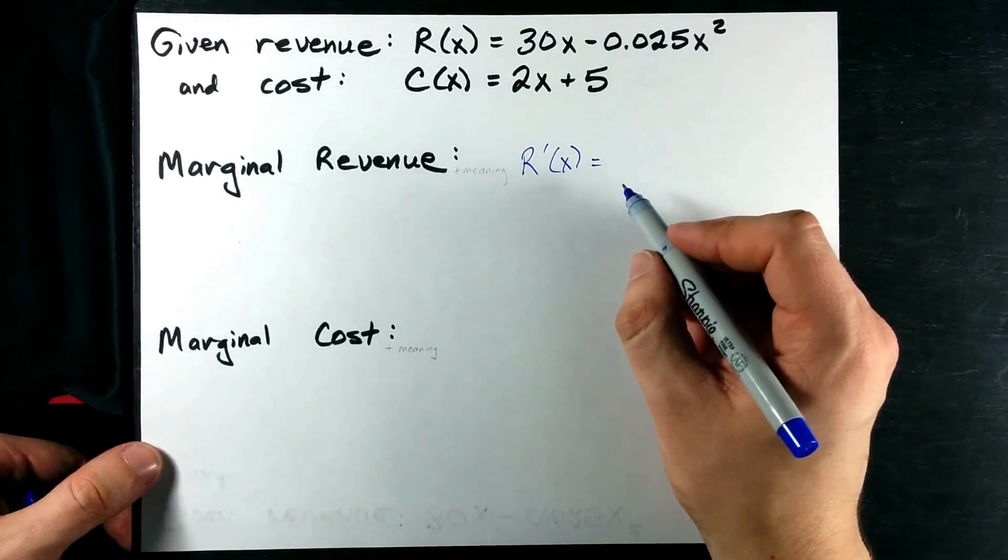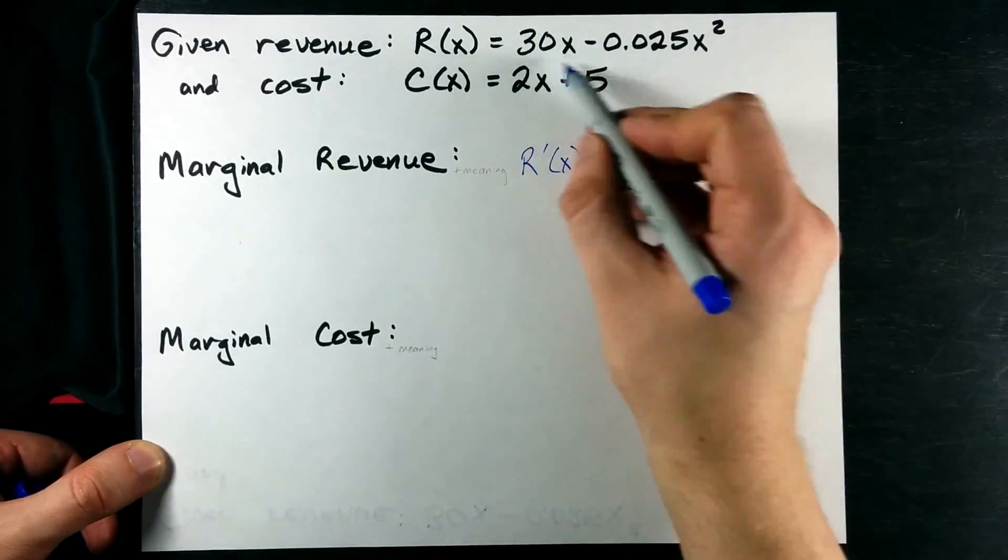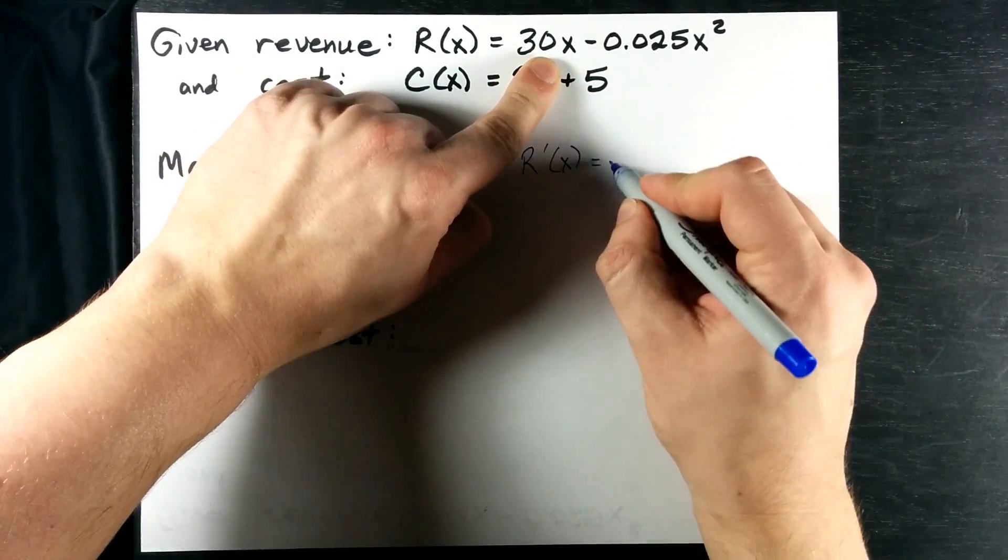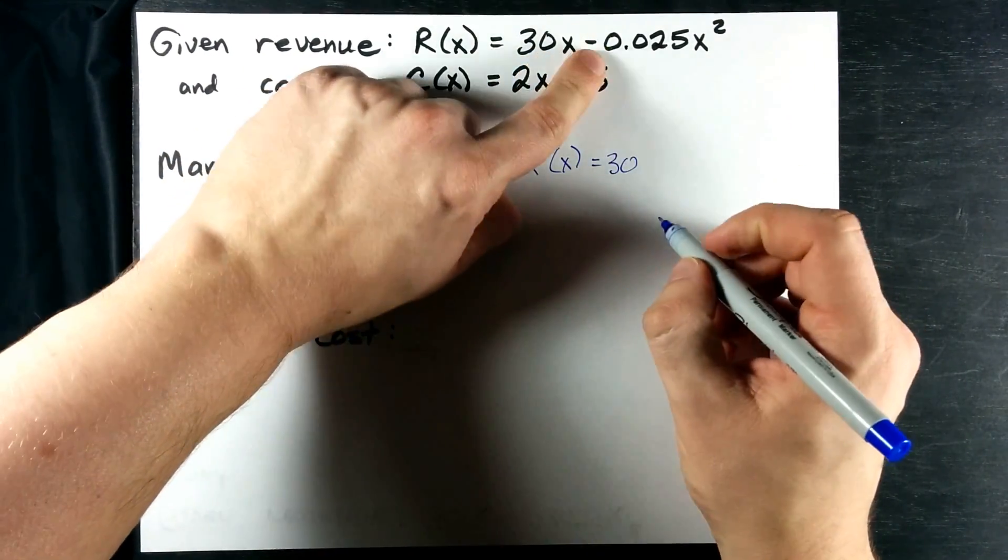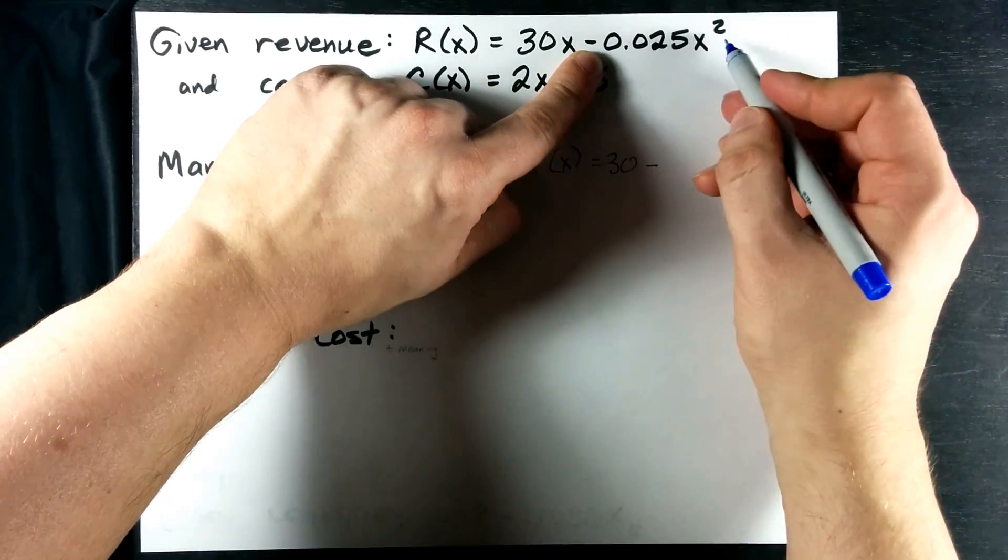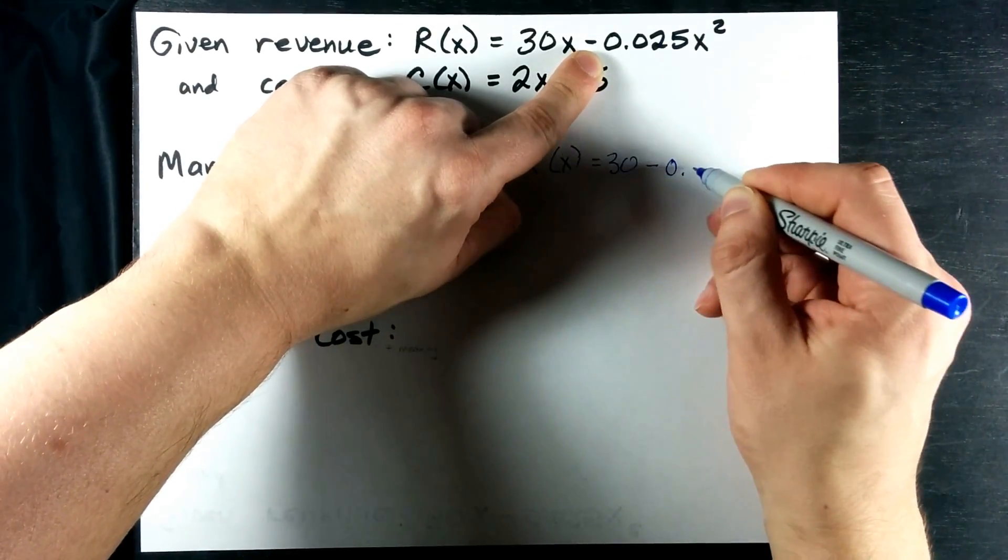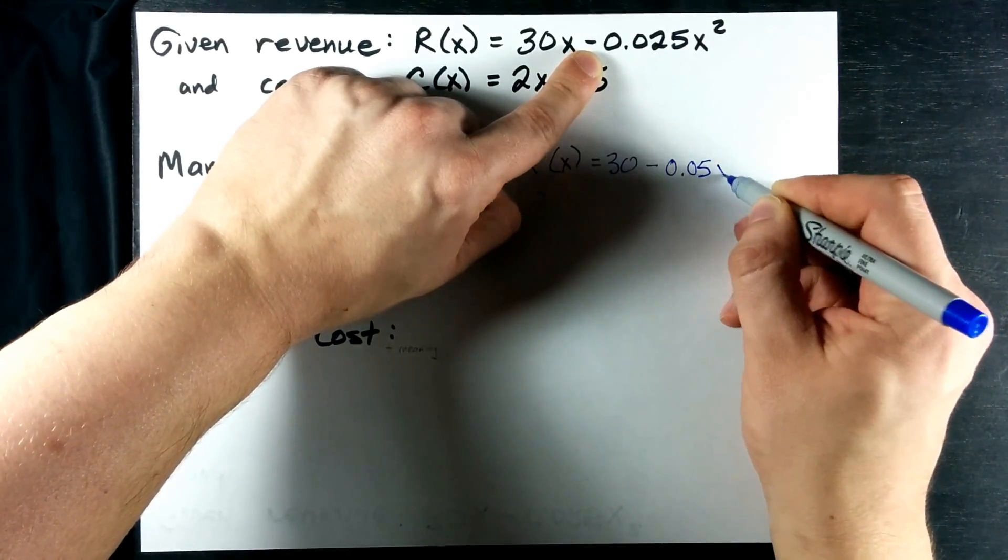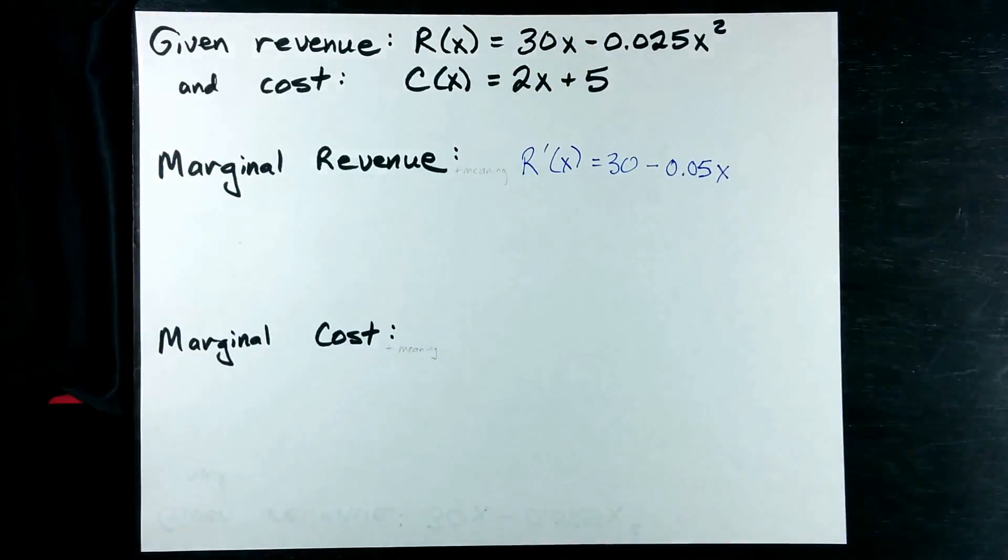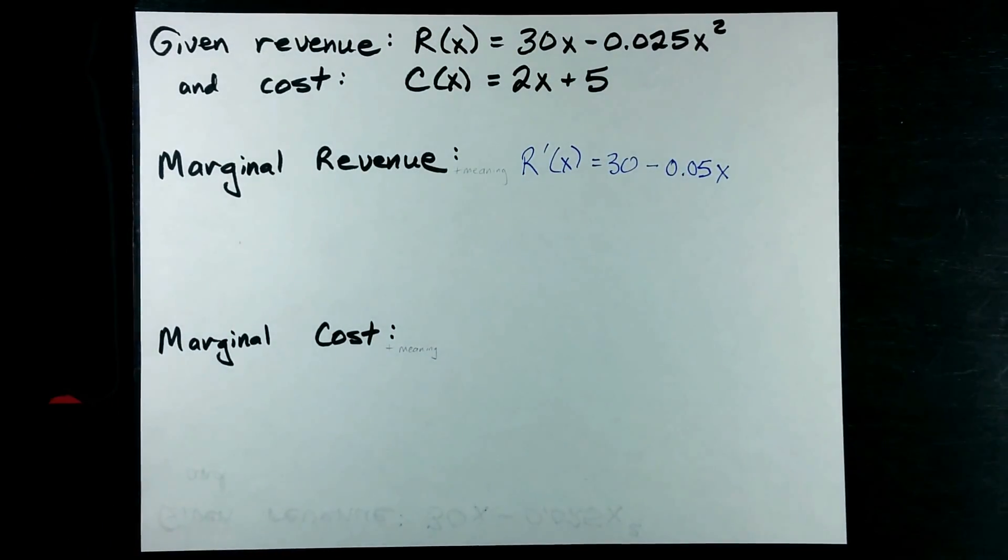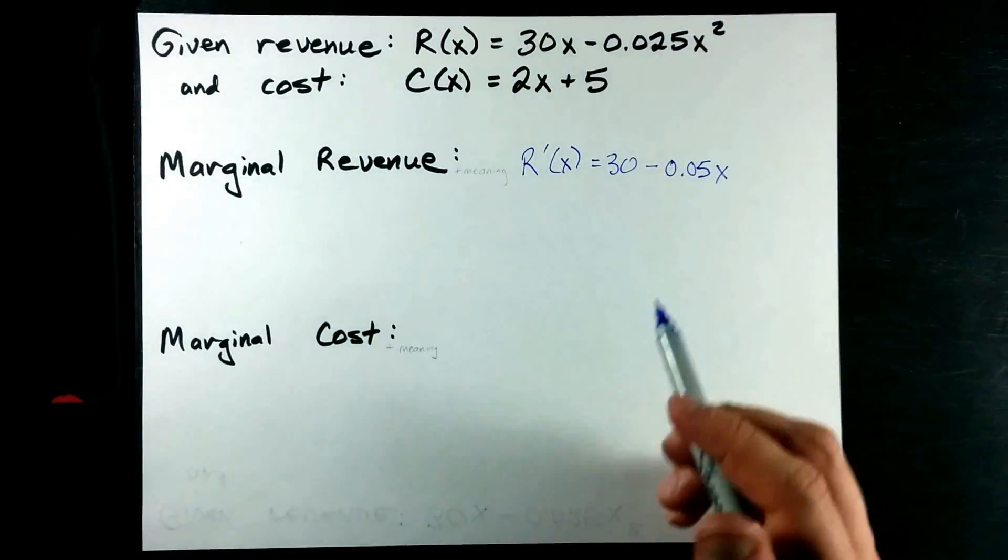Now, the derivative of this function here is, well, the derivative of that is 30, and the derivative of this is bring the 2 down, that doubles the coefficient, and I notch the exponent down by 1 on x. Well, that was super easy.